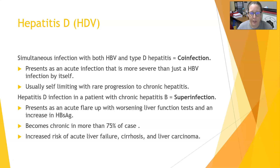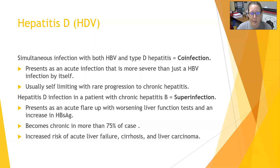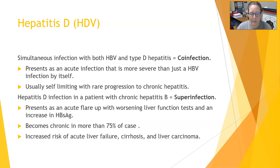Simultaneous infection with both hepatitis B and hepatitis D is considered a co-infection, meaning the patient is acquiring both HBV and HDV at the same time. It will present as an acute infection, but it is more severe than hepatitis B infection by itself. It is usually self-limiting.